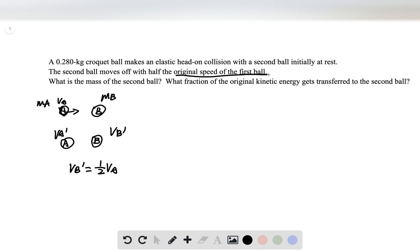First, we're asked to find what is the mass of the second ball, what is mB. Let's first write down the equation for the relative speed. For elastic collisions, the relative speed of the two objects before the collision is always equal and opposite to the relative speed after the collision.